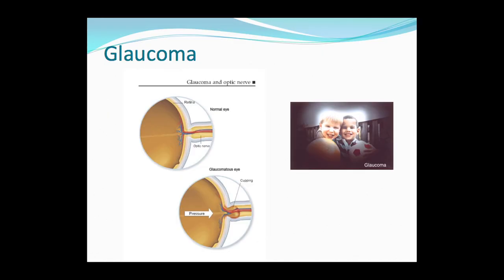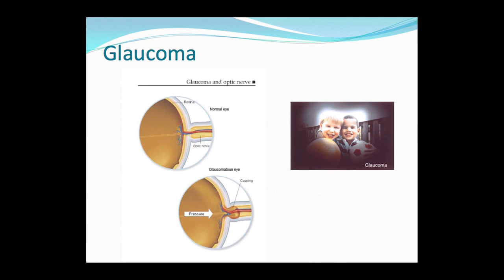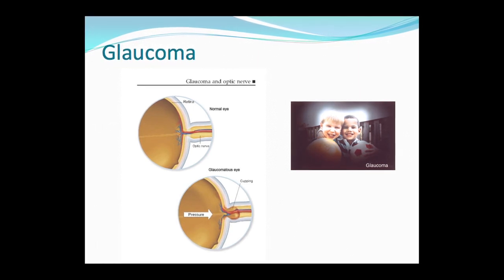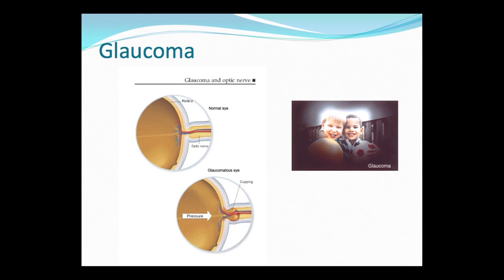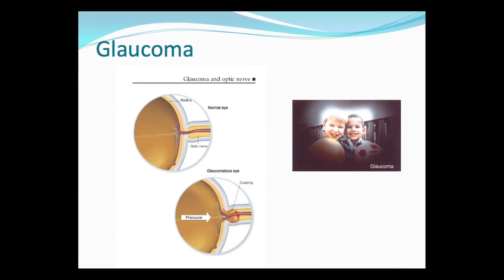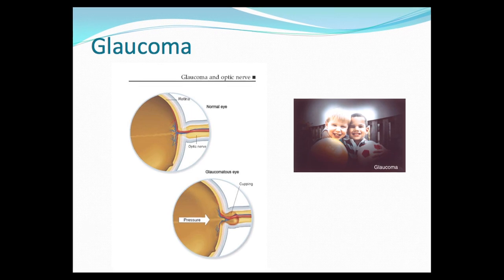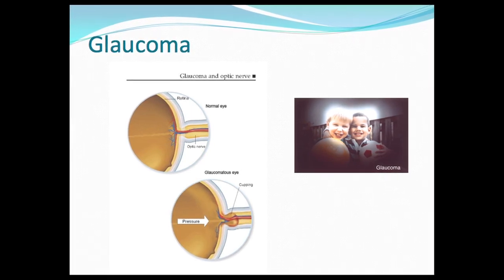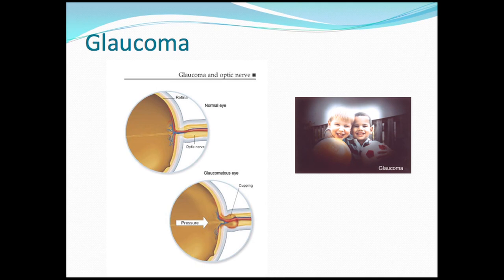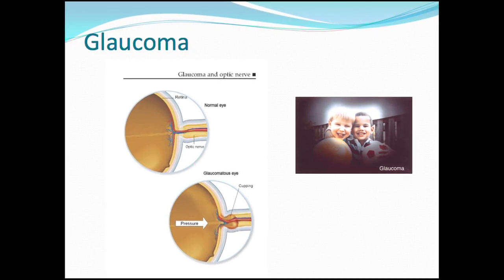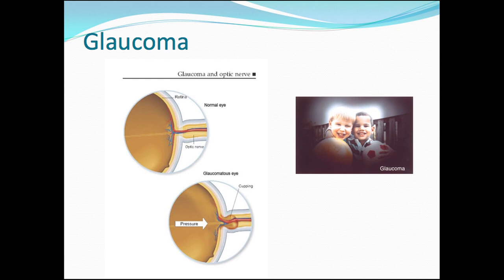Glaucoma is a name for a set of diseases that can cause damage to the optic nerve. Some types of glaucoma are caused by an increase in pressure in your eye, called intraocular pressure. This can cause parts of the optic nerve to pinch and lead to damage of those cells. It can become so severe that it can lead to blindness. For your last challenge, you will observe your blind spot.